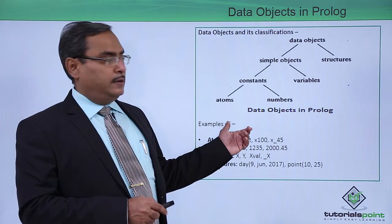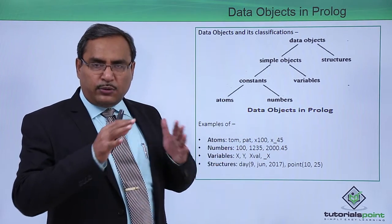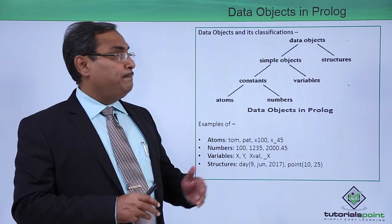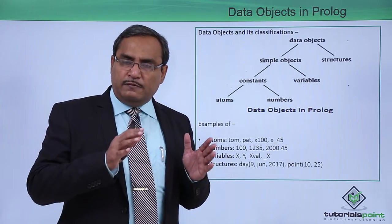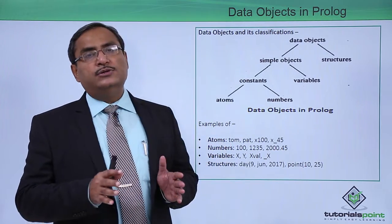This is the respective tree structure to show you what categories are there and what the sub-categories are. Data objects mainly can be divided into two parts: simple objects and structures.